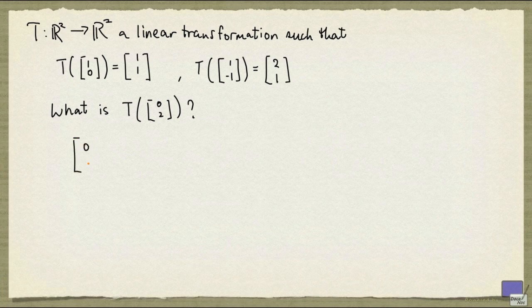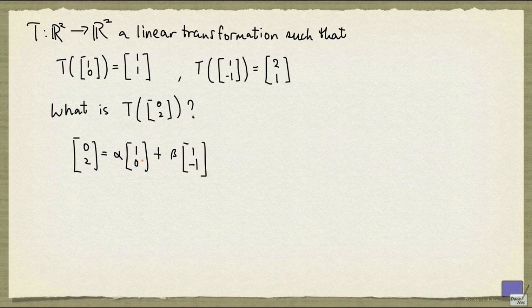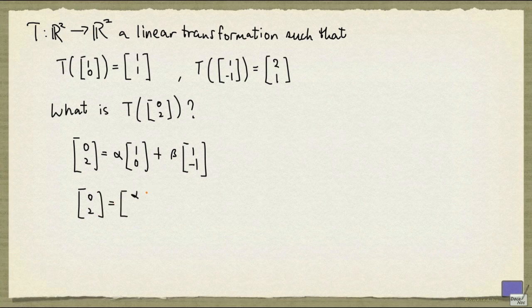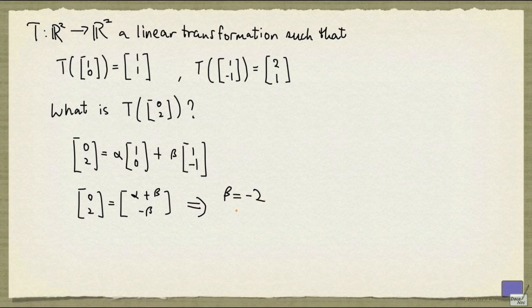So we want to write [0,2] as α times [1,0] plus β times [1,-1] for some α and β. This can be rewritten as [0,2] equals [α+β, -β]. And it's easy to see that we need to set β to -2 and α to 2.